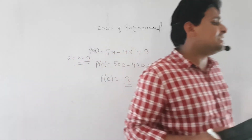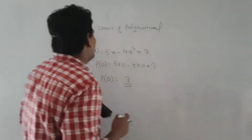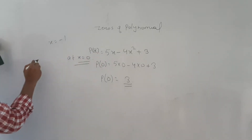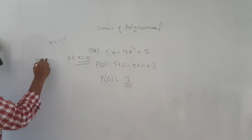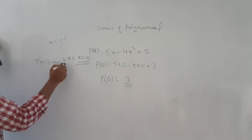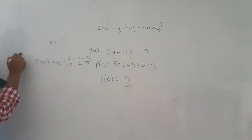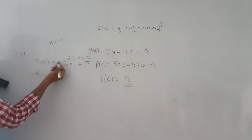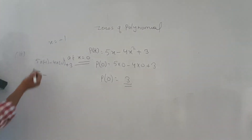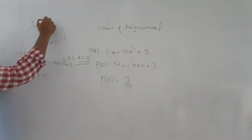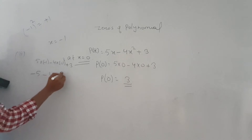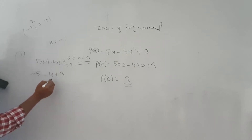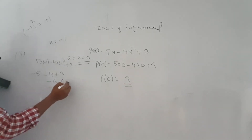Next part: check at x equal to minus 1. Wherever you see x, put minus 1. So p(minus 1) equals 5 times (minus 1) minus 4 times (minus 1) squared plus 3. That gives minus 5 minus 4 times plus 1 plus 3. So minus 5 minus 4 plus 3 equals minus 9 plus 3, which is minus 6. The answer is minus 6.